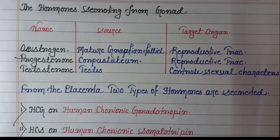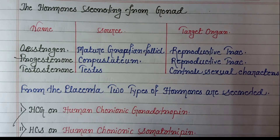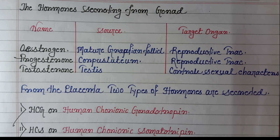Now let's talk about the hormones secreted from the gonads — the sex organs, that is the testis and ovary. First is estrogen, secreted from the mature Graafian follicle, and the target organ is the reproductive tract of the female body. Next is progesterone, secreted from the corpus luteum, and the target organ is also the reproductive tract of the female body. And testosterone is secreted from the testis, and the target organ is the male reproductive organs.